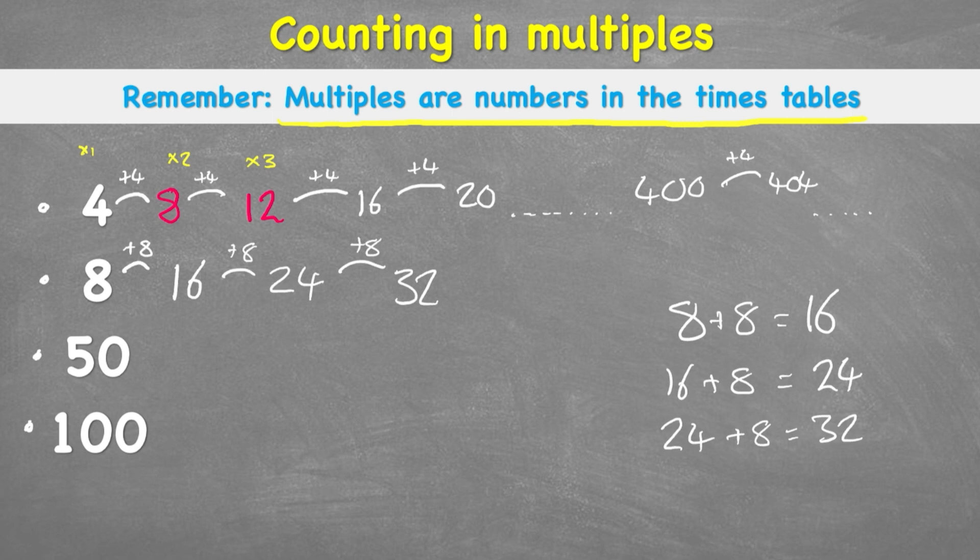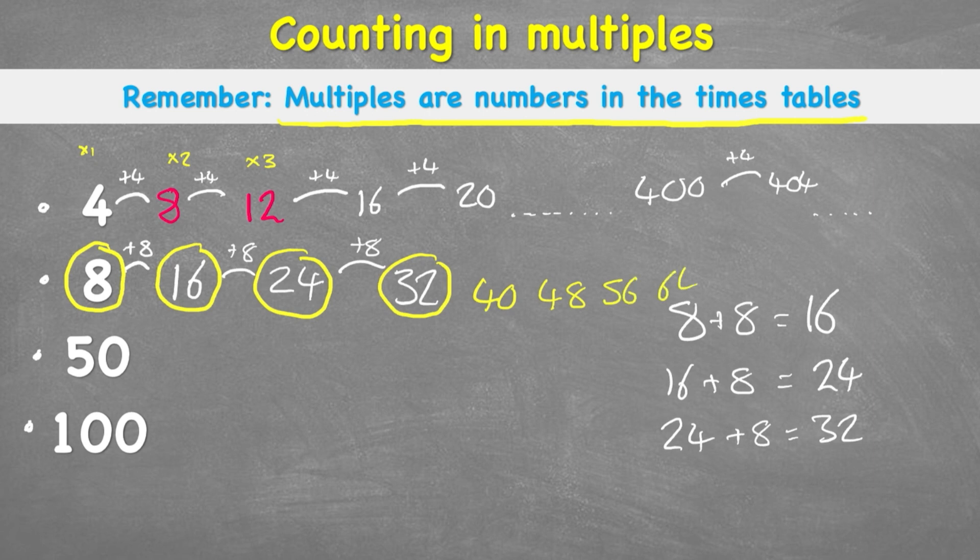So our first 4 multiples of 8 would be 8, 16, 24, 32. And then our next one would actually be 40, then 48, 56, 64, 72 and 80. But remember we can go on forever. There is no end.